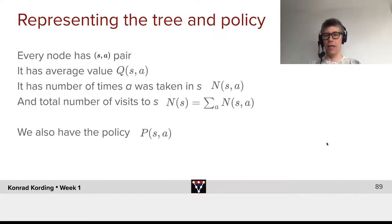We will also want to store the number of times we have chosen action a in state s, that is the count N of s and a. And the total number of visits then can be calculated. The number of visits to state s is the sum of all actions of the number of times that we've taken that action in the state. We will also have the policy P of s and a.